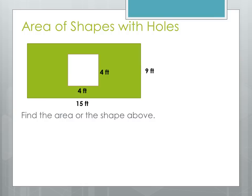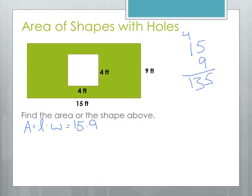The area of the rectangle — we know area is length times width — so here we'll have 15 times 9. Doing the scratch work: 15 times 9, 9 times 5 is 45, giving us 135 square feet for the rectangle.